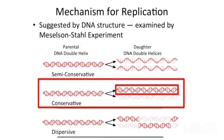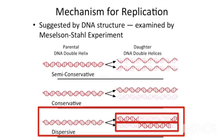The one shown in the middle here, called conservative, allows you to keep the original double helix intact and you create a new duplicate — that is, you conserve the original double helix and create a new one. In dispersive replication, regions of the original DNA are dispersed throughout two new strands, so that there are double-stranded segments of the original DNA in both of the new helices.